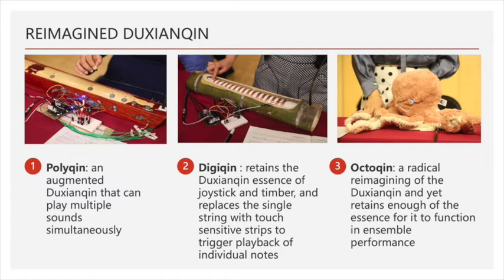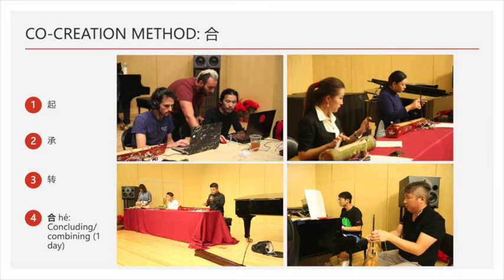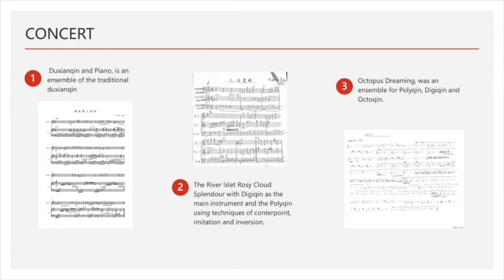The final co-creation stage culminated in a public performance at the Central Conservatory of Music in Beijing to showcase the features of the reimagined Du Chen Qing. The composers created special compositions to explore the expressive potential of each reimagined instrument. All pieces are in a traditional Chinese music style, incorporating a small number of modernist and electronic music elements. Let's watch a video of some of the performance.